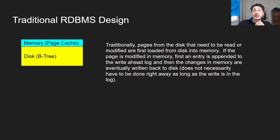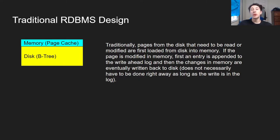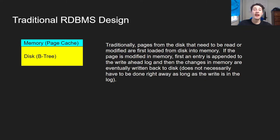So what is the traditional RDBMS design? Most databases look something like this, where we have a B-tree on the disk, and then we have a layer of memory — that's going to be smaller — called a page cache. The point of the page cache is to load in relevant parts of the B-tree that are frequently accessed for reads. For a write, the B-tree is loaded into memory, that page gets modified, and then a change is written into the write-ahead log. It's not necessarily important to write the page back to disk just yet, because it's in the write-ahead log — if things crash, we can use it to recover. This is how we buffer some of those writes to memory.